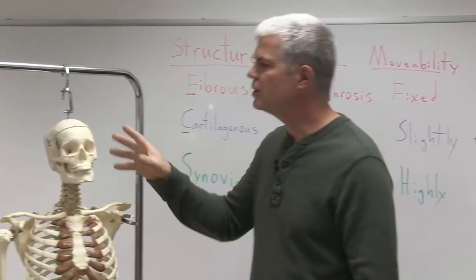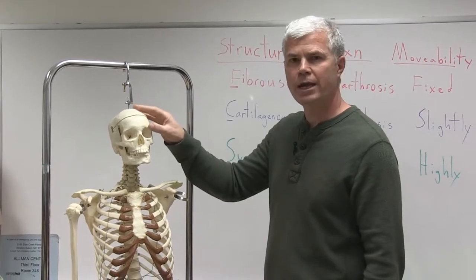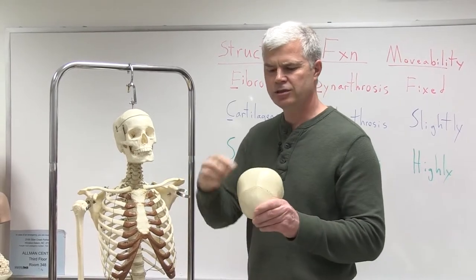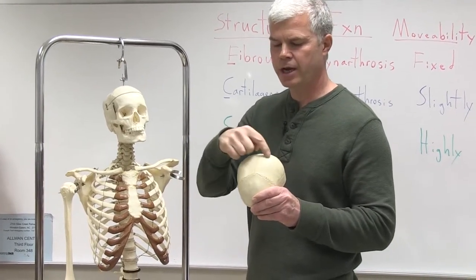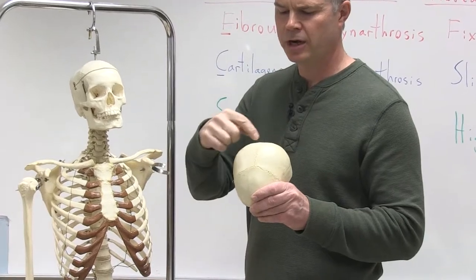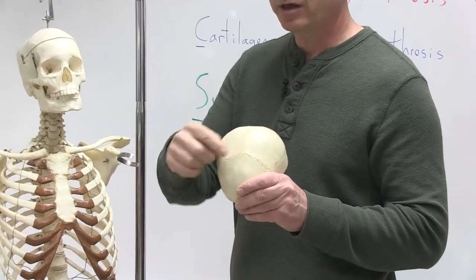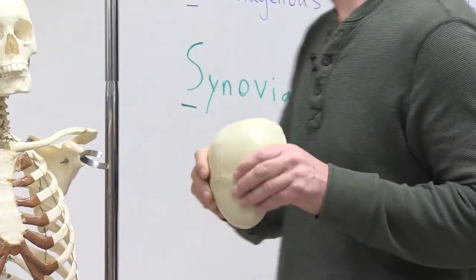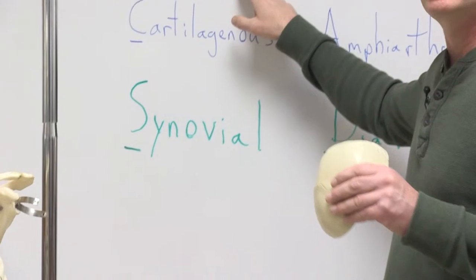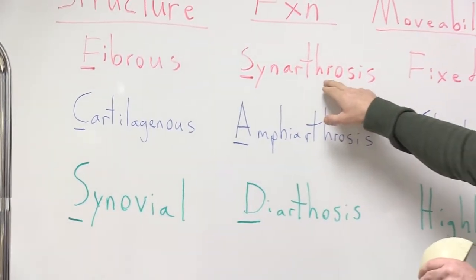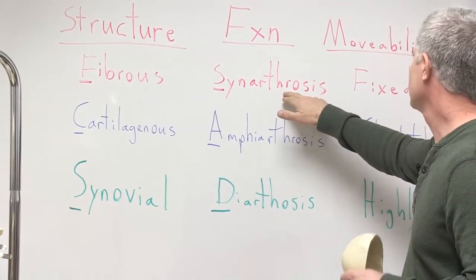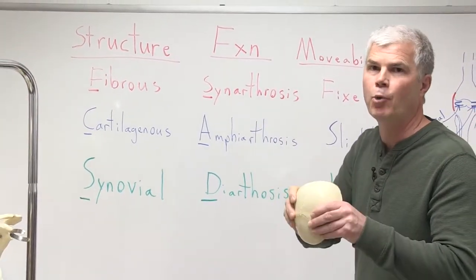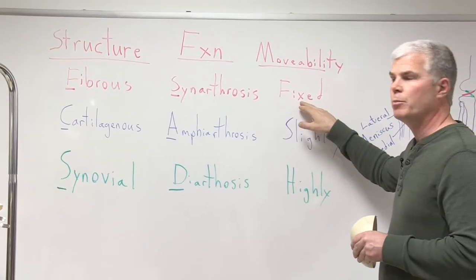For instance, looking at the calvaria here, there is a joint between two bones of the cranium. These are the parietal bones, and they are joined by what's called the sagittal suture. This suture is essentially solid bone — it has no mobility to it. So this is a fibrous type of bone joint. It is classified as being a synarthrosis, which is associated with its mobility. Essentially there's a synthesis of these two bones; they become one and are fixed in mobility.